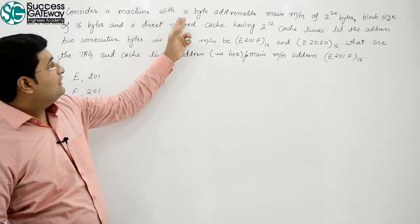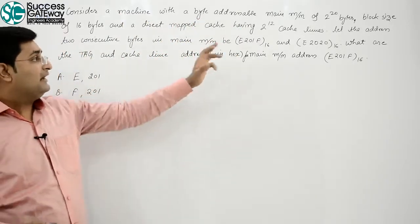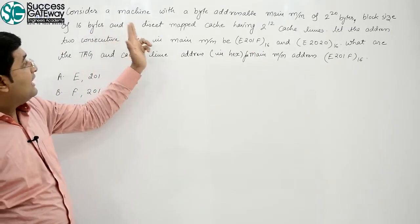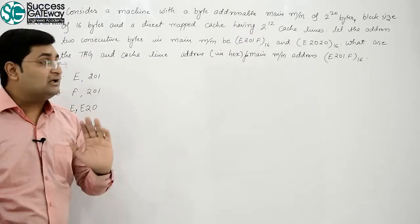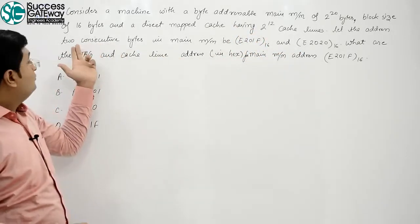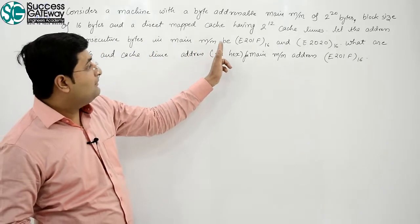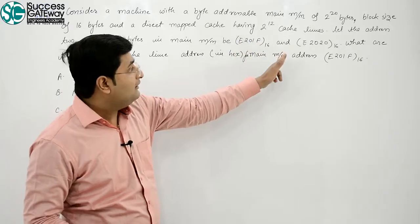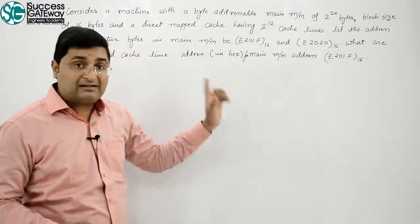Consider a machine with a byte addressable main memory of 2^20 bytes, block size of 16 bytes and a direct map cache having 2^12 cache lines. Let the address of 2 consecutive bytes in main memory be E201F and E2020 in hexadecimal.